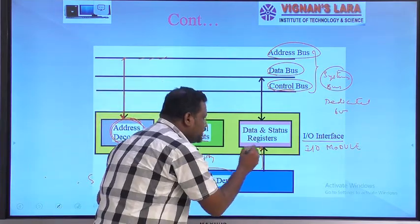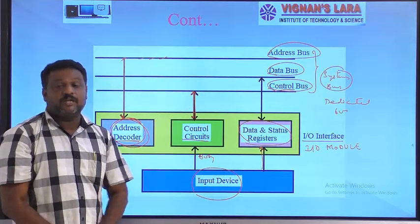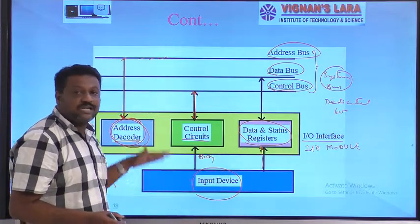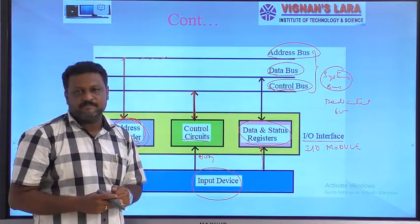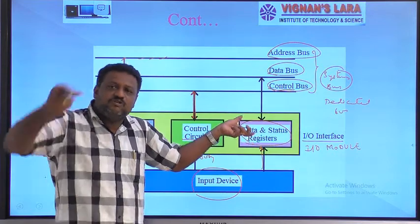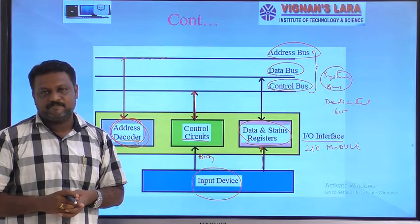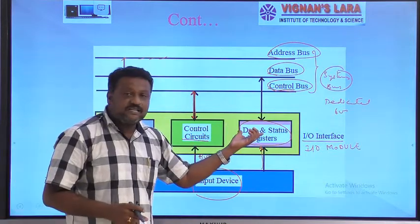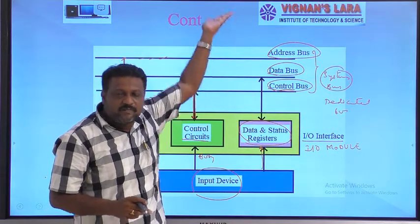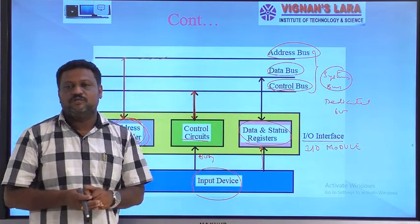The data is immediately transferred to the data and status registers. For each I/O device connected to the I/O module or I/O interface, a pair of registers exists in the I/O interface: one is a data register and the second is a status register. With the help of the data register, data may be transferred to the CPU via the system bus, or it may receive data from the CPU and transfer it to the I/O device.